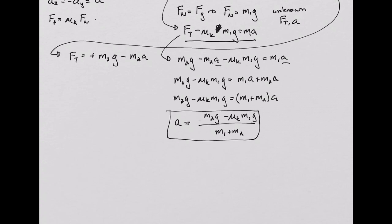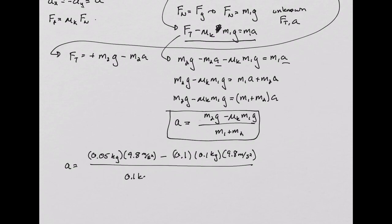Writing those in, we have 0.05 kilograms, that's what 50 grams is in terms of kilograms, times 9.8 meters per second squared, minus 0.1, times 0.1 kilograms, times 9.8 meters per second squared, divided by 0.1 kilograms, plus 0.05 kilograms.